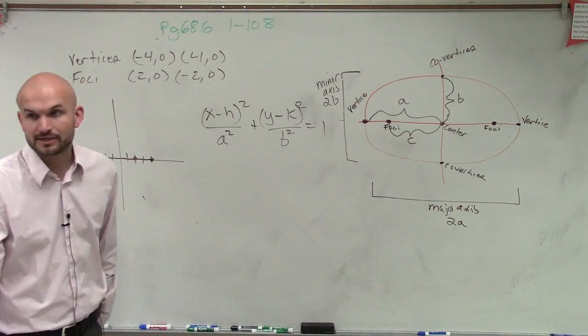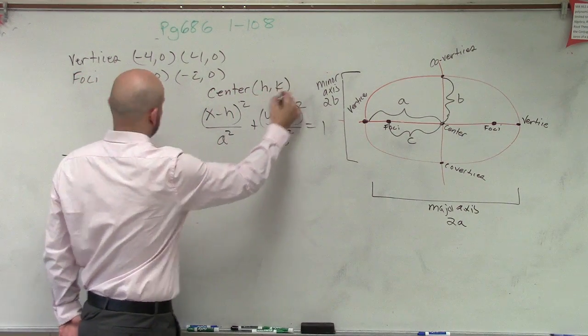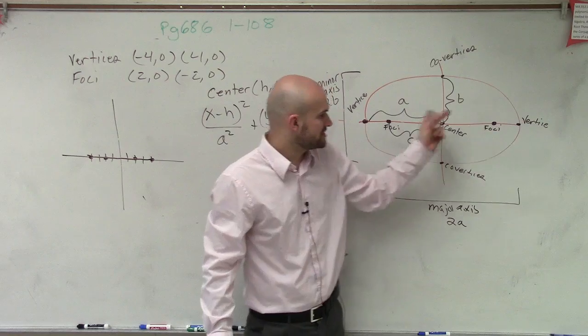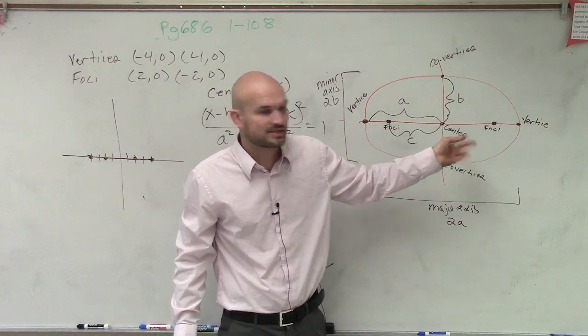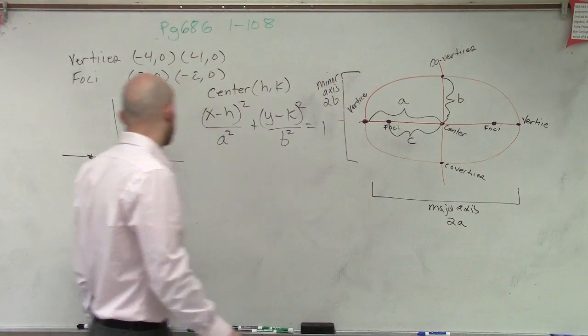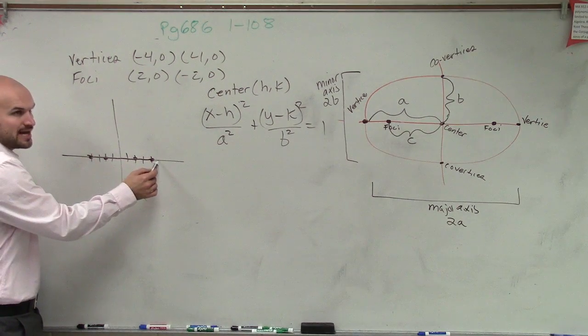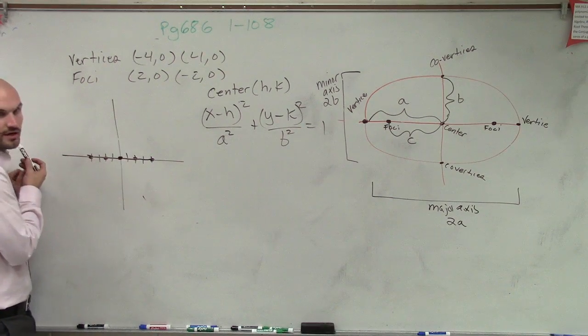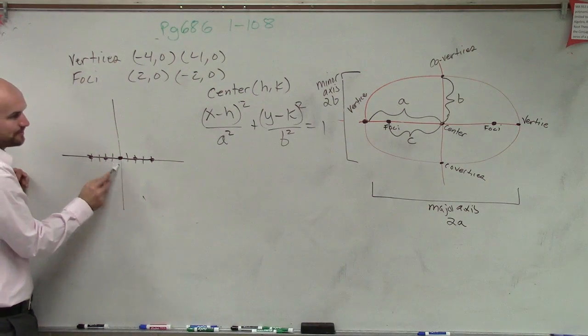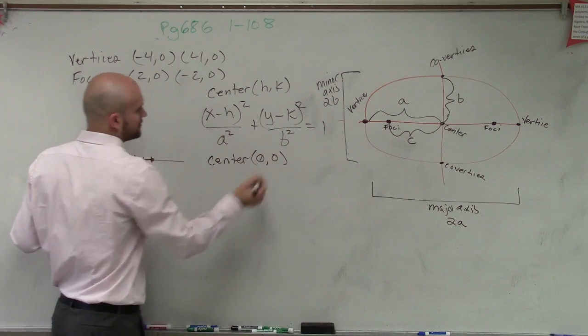So now, let's determine our values that we need to know. So remember, center, just like a circle, is h comma k. Now, if you guys notice, the center is halfway between the distance of the two vertices and also halfway between the distance of your two foci. Just by looking at this, guys, if here is negative 4, 0, and here's 4, 0, what's halfway between that? 0, 0, right? Because the total distance is 8. So you can see that halfway between there is just going to be 0, 0. So our center is at 0, 0.